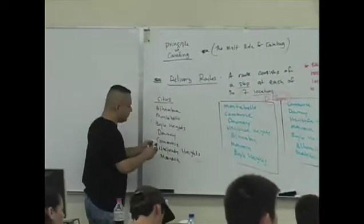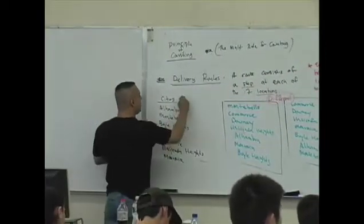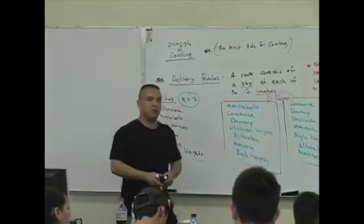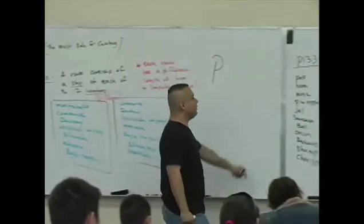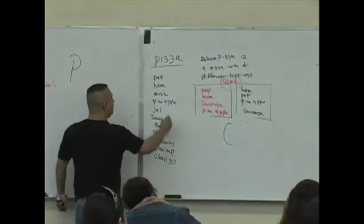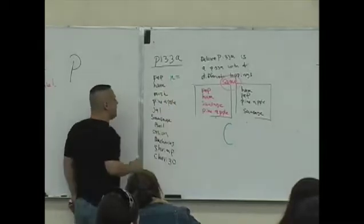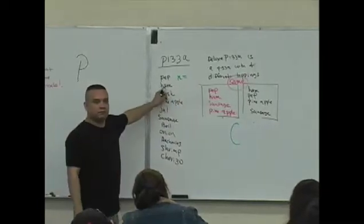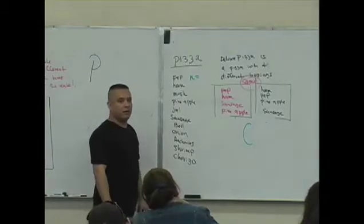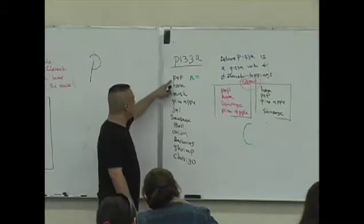Okay, what do we mean by a pool of n items? Go back to these examples. How many cities are in this pool of cities? N is seven in this example - you've got seven cities in the pool. How many in the pizza example? How many toppings do you have to choose from? How many are in this pool?